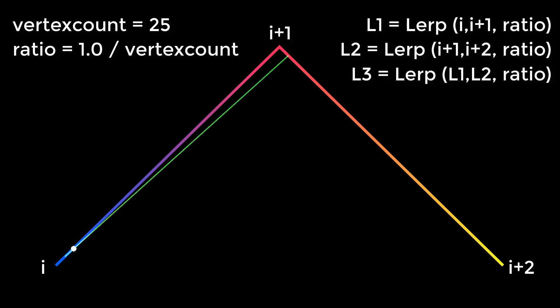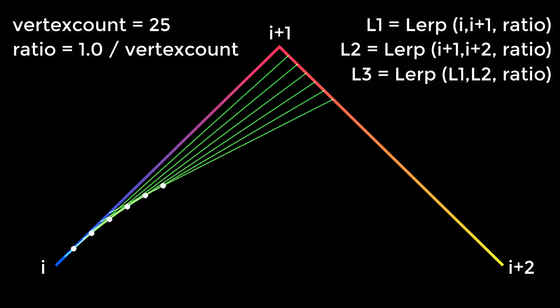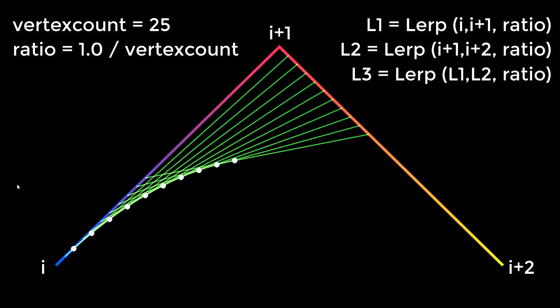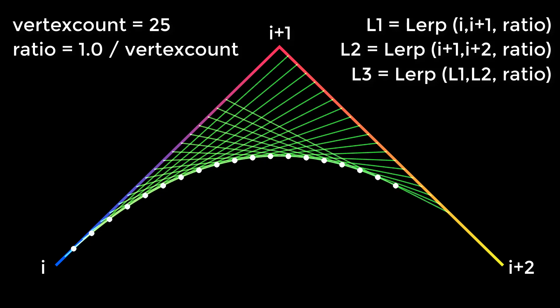Stepping through each iteration, the position changes on the first line and correspondingly on the second line. With the same ratio, the position changes on the interpolation between the results of those two lines, creating a new point each step. Once all these points are calculated, they are added in between the first and the third point.